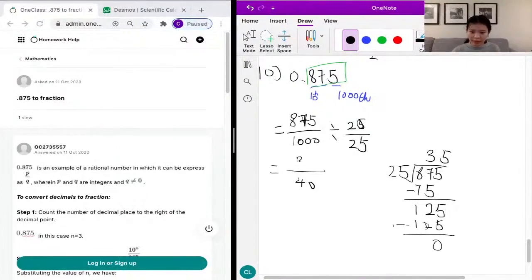So, here we have 35, and our fraction is reduced to 35 over 40, which can be further reduced because we have another common factor, which is 5. So, we just divide both the top number and the bottom number by 5, and 35 divided by 5 is 7. 40 divided by 5 is 8.